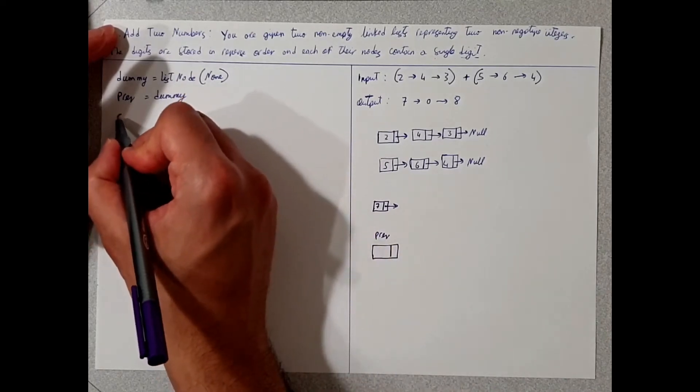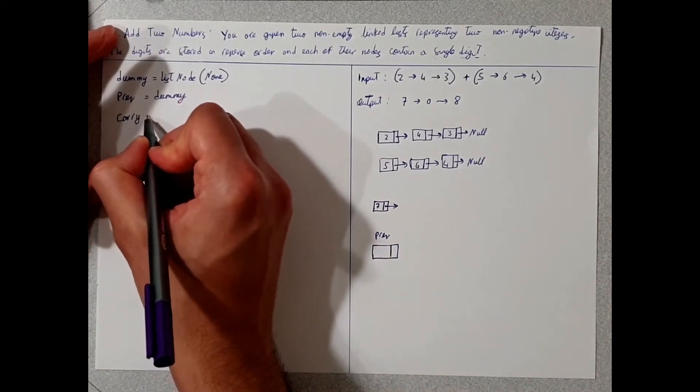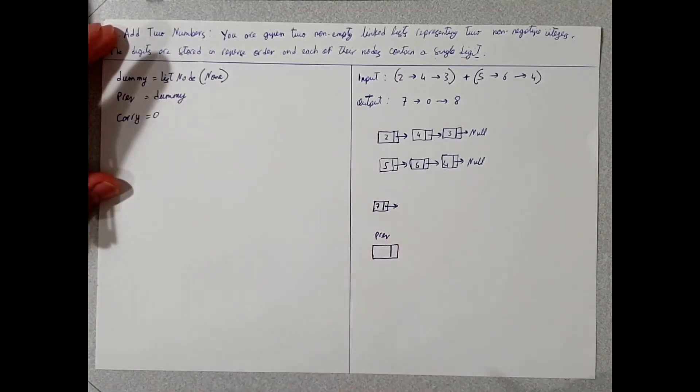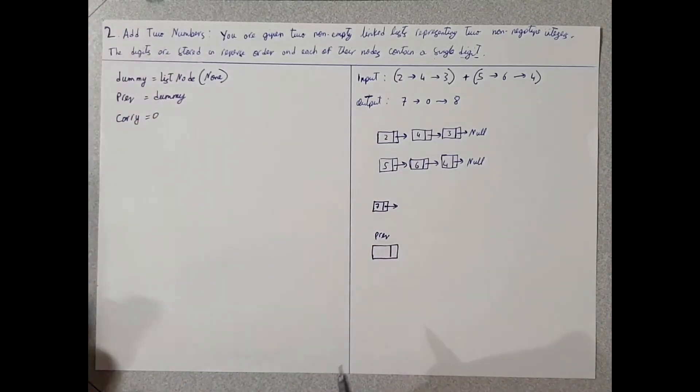We're going to create something called carry equals zero. And this carry equals zero will hold on to the value as we do the addition, so it'll become clearer as we go through.